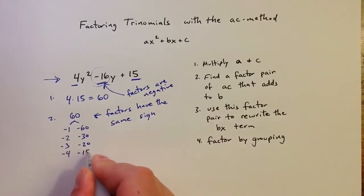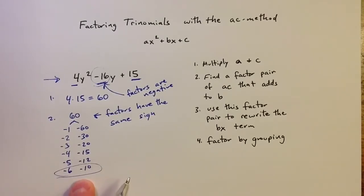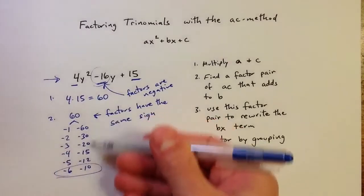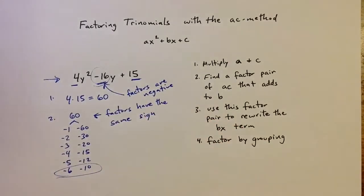Negative 4 and negative 15 would add to negative 19. Negative 5 and negative 12 would add to negative 17. And negative 6 and negative 10 adds to negative 16. So if you see it, you can kind of jump to that right away. But if not, we can work through the list. So negative 6 and negative 10 is the factor pair that we want.